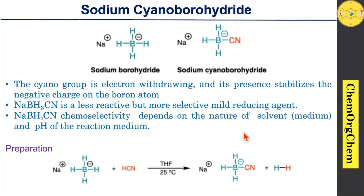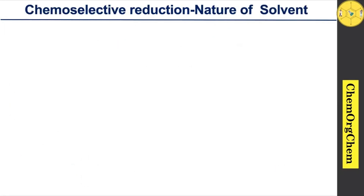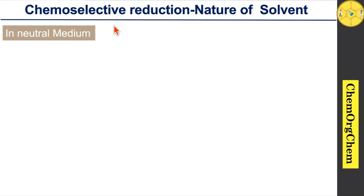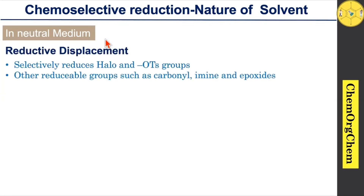Let's move into the exciting applications of sodium cyanoborohydride. As already mentioned, sodium cyanoborohydride is useful for chemoselective reductions, and this chemoselectivity mainly depends on the nature of the solvent. First, we will see chemoselective reductions in neutral medium. The first example is reductive displacement.